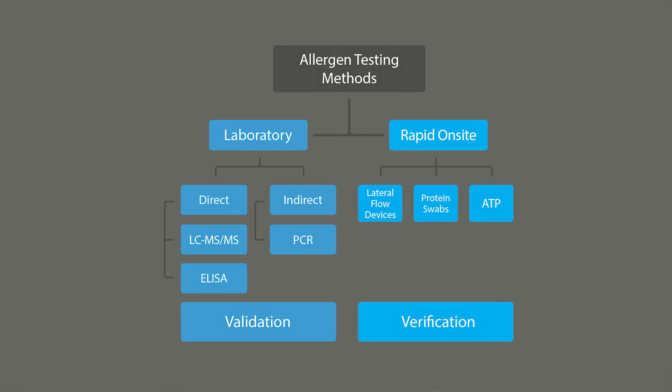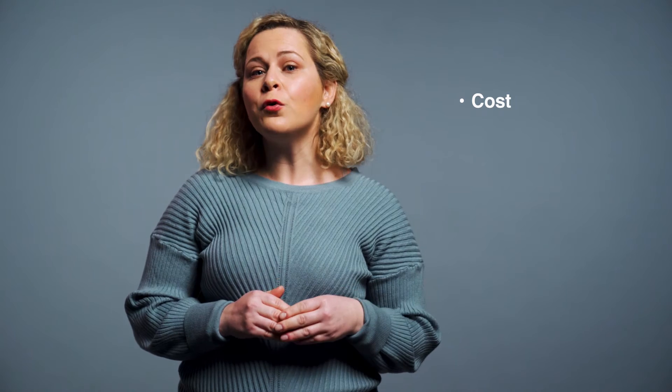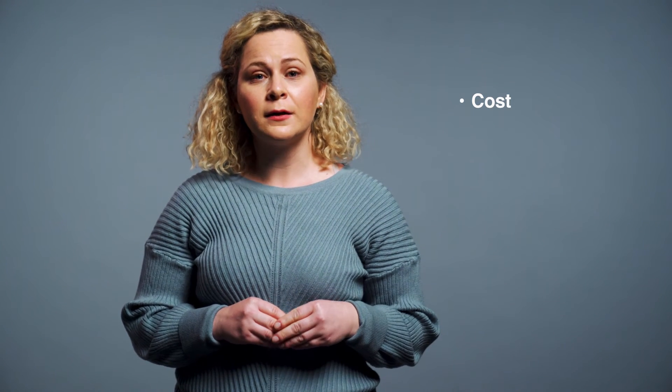Watch videos six and seven for more in-depth discussion on allergen-specific lateral flow devices and total protein indicators. How do you choose a rapid on-site testing kit? Multiple factors may guide your choice, but there are a few key considerations. First, cost — both the cost of the kits themselves and the cost of any auxiliary equipment you may need.